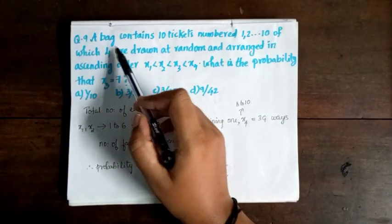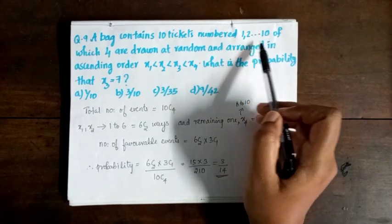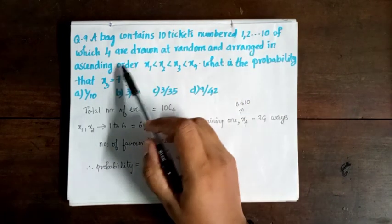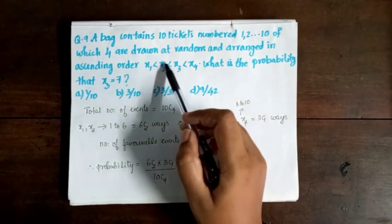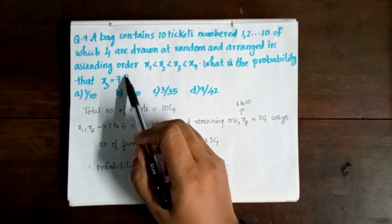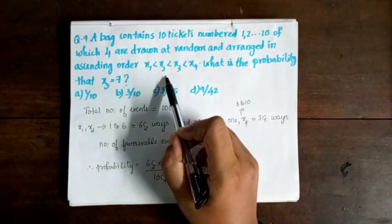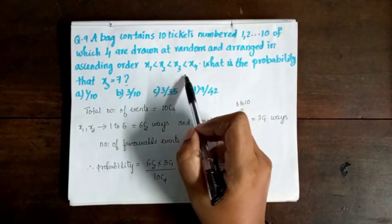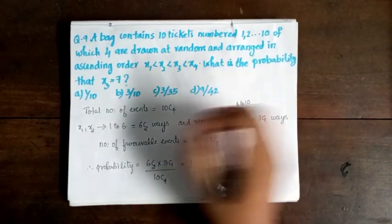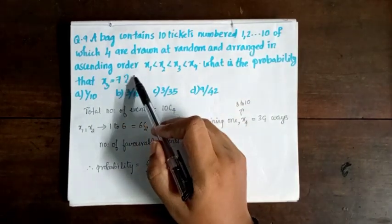A bag contains 10 tickets numbered 1 to 10, of which 4 are drawn at random and arranged in ascending order: x1 < x2 < x3 < x4. What is the probability that x3 equals 7?